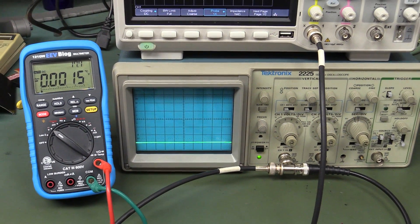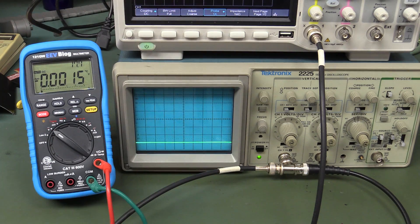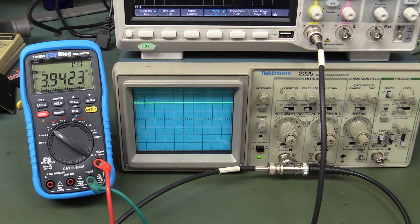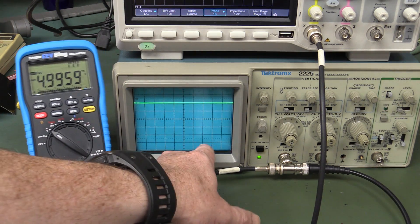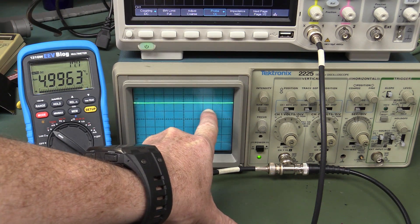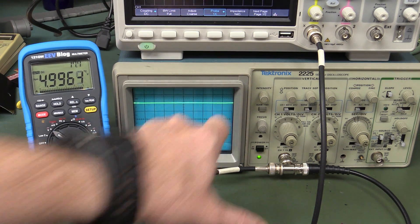So we're feeding in zero volts and we're getting that line. Now, on one volt per division, if we feed in five volts, bingo! You'd expect it to jump up by five divisions. So one, two, three, four, five. And that's exactly what it done.